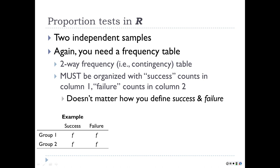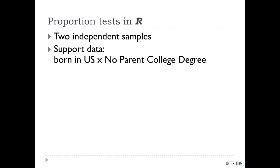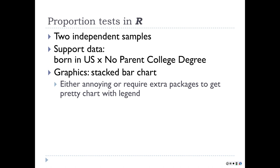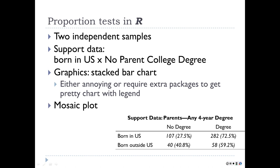The table needs groups in rows and conditions in columns — for instance, whether you're born in the U.S. versus no parent college degree, yes or no. The terms 'success' and 'failure' come from the old days when examples involved flipping a coin — heads was success, tails was failure. The language has stuck in the R documentation. You arrange your data with born in U.S. / not born in U.S. as rows and no degree / at least one degree as columns.